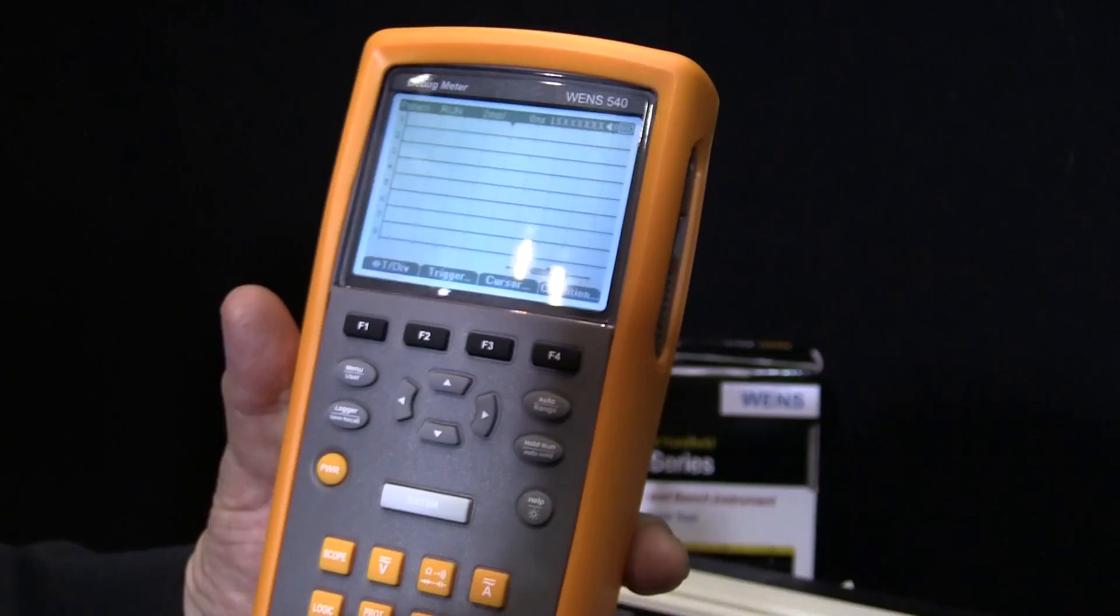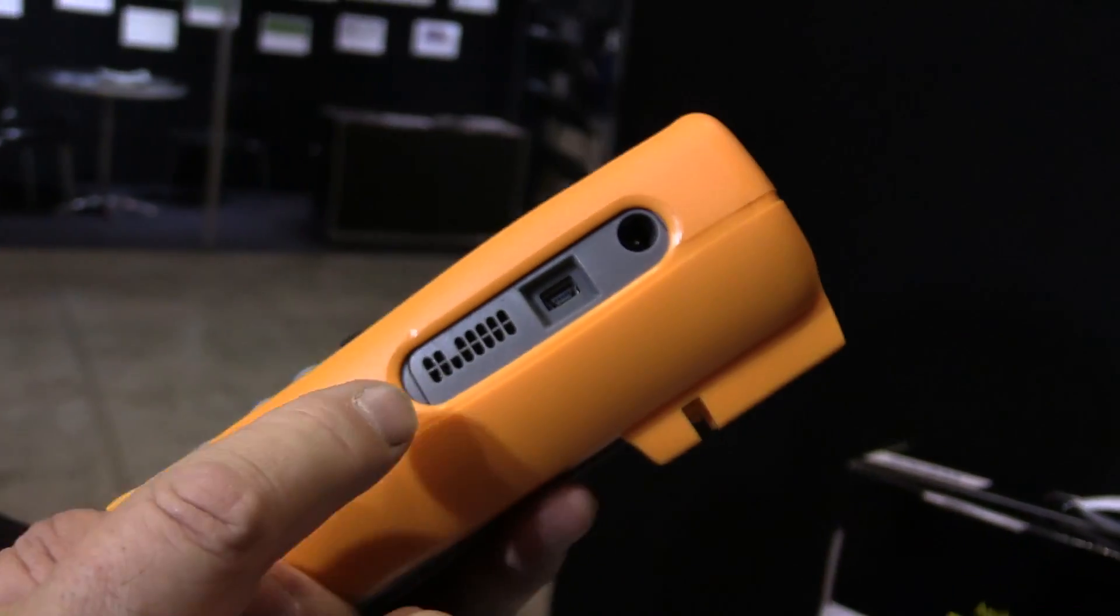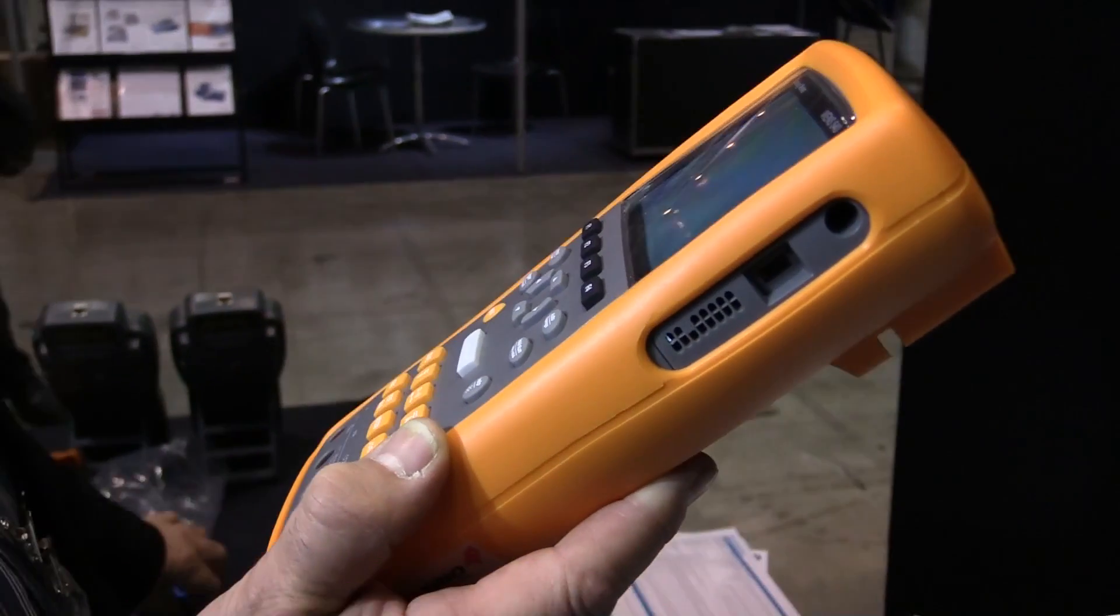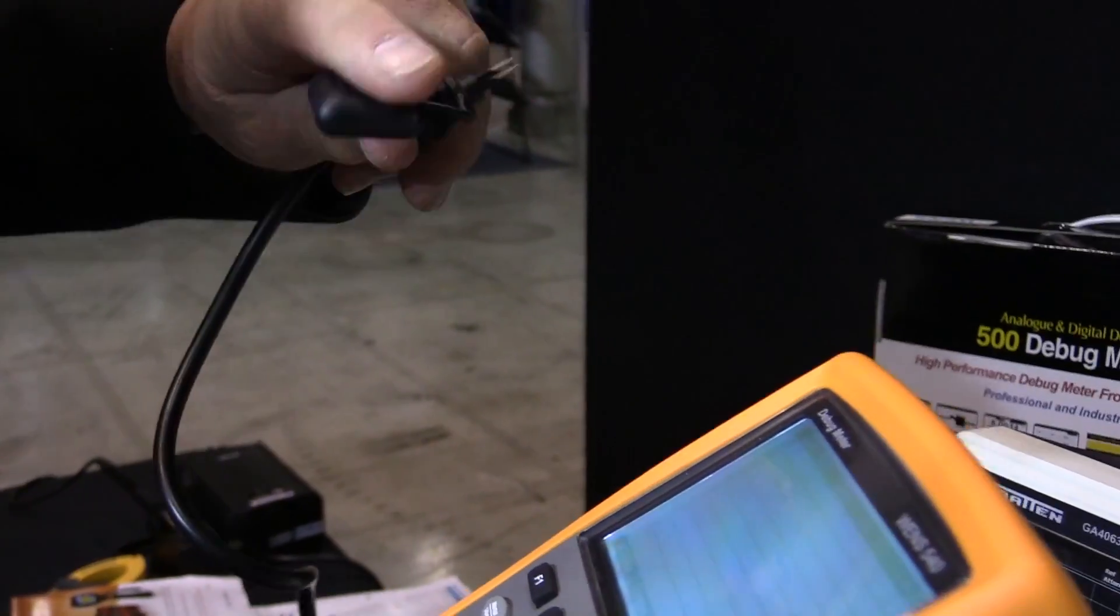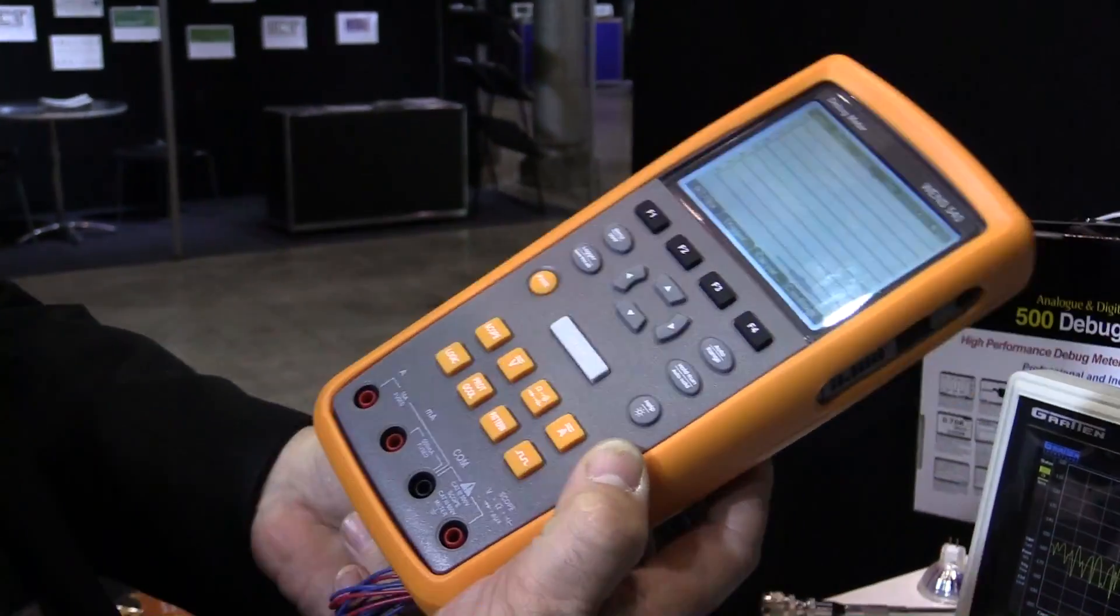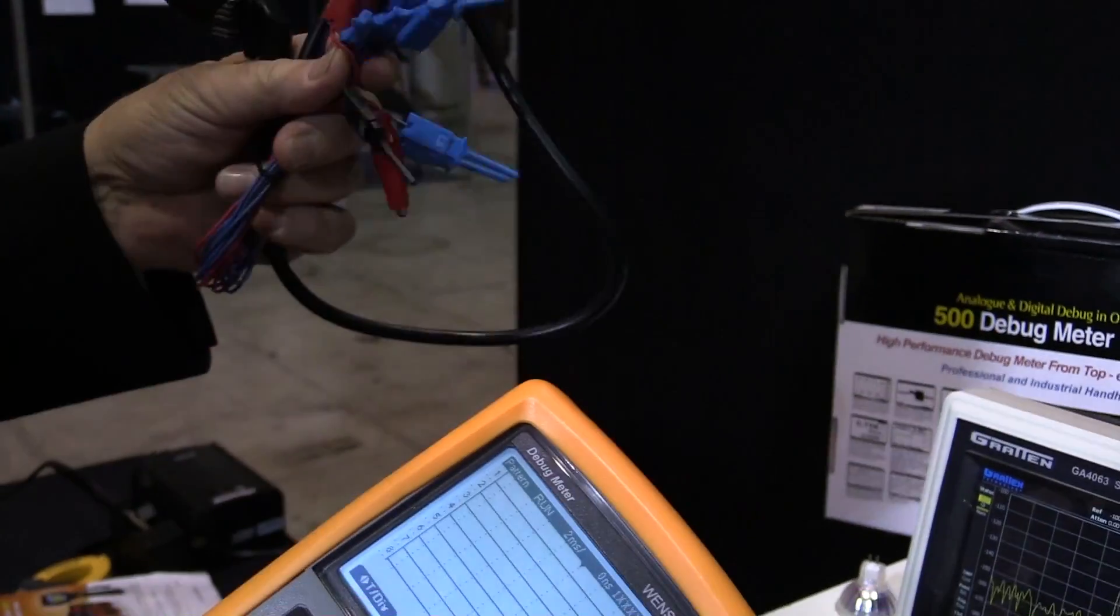It's then got an eight channel logic analyzer. It's with that plug in the side here. It's a timing analyzer. There's a socket here and it comes with all the probes, which we've got here. So this just plugs in the side and it's obviously keyed, as you can see. And we've got all the connectors on the other end. It's a logical place to put them. They're quite good looking probes, quite nice. You've got a couple of grounds there as well.